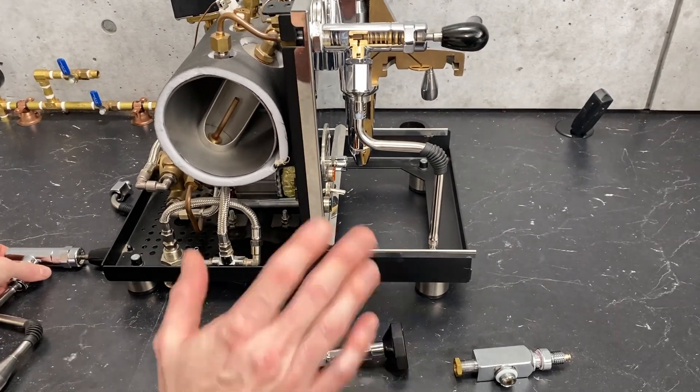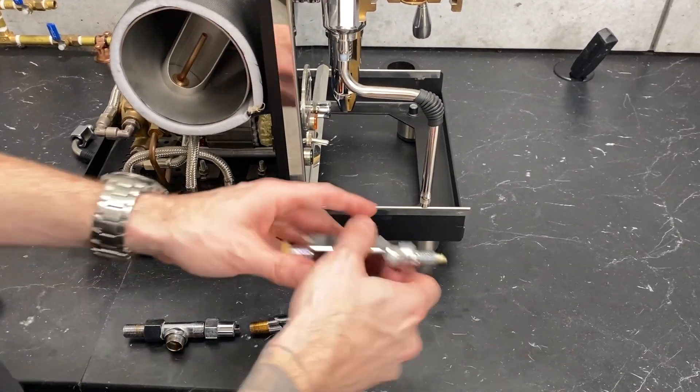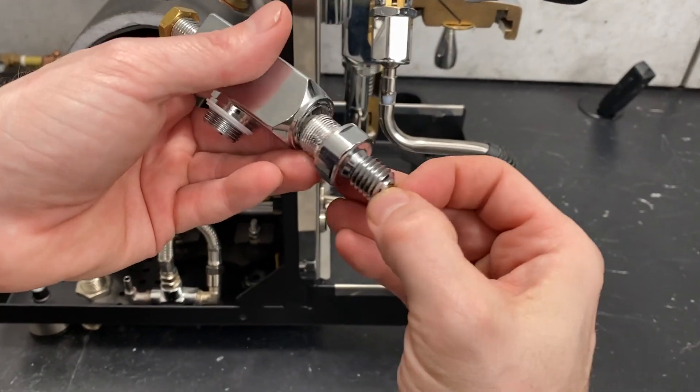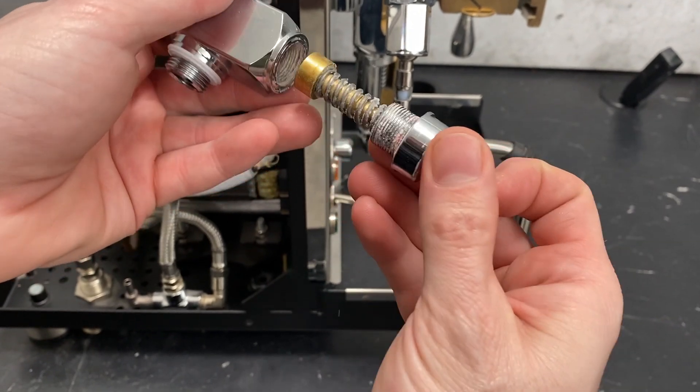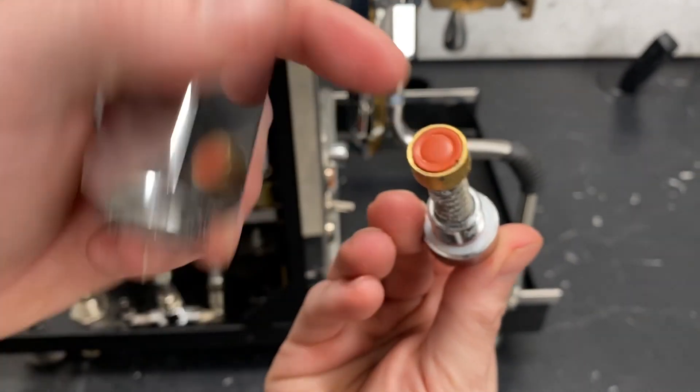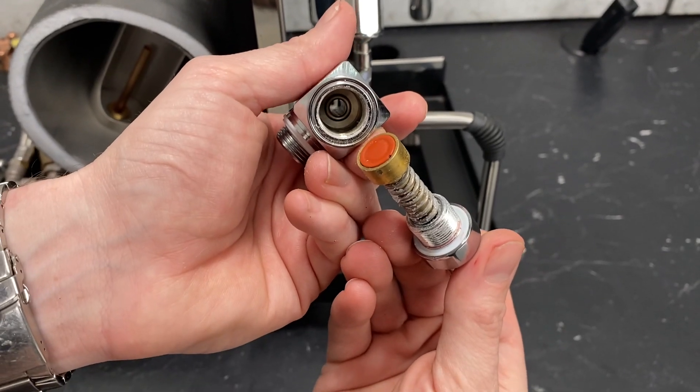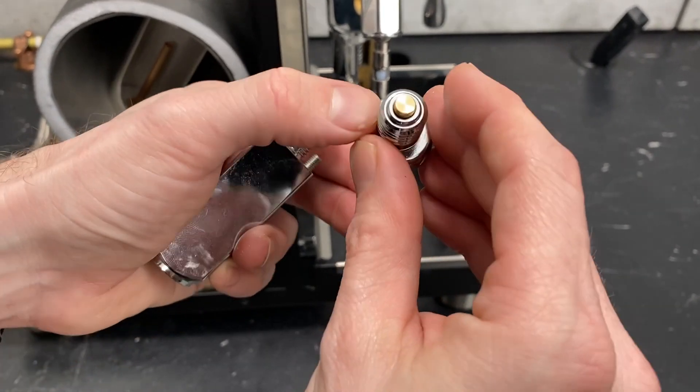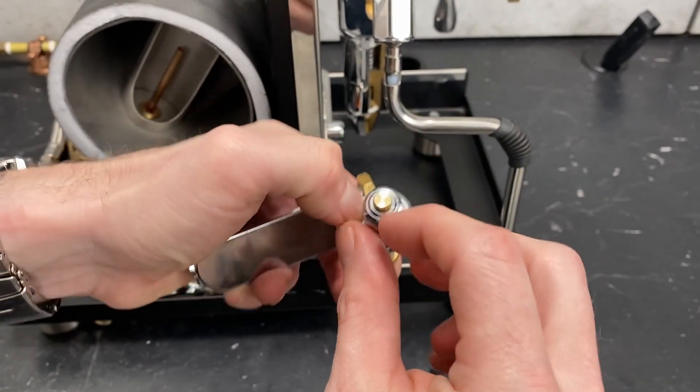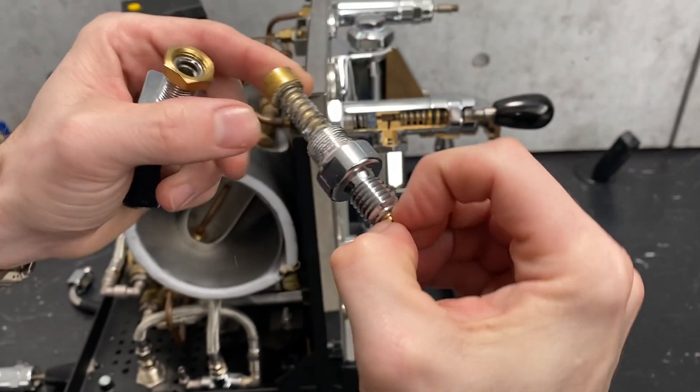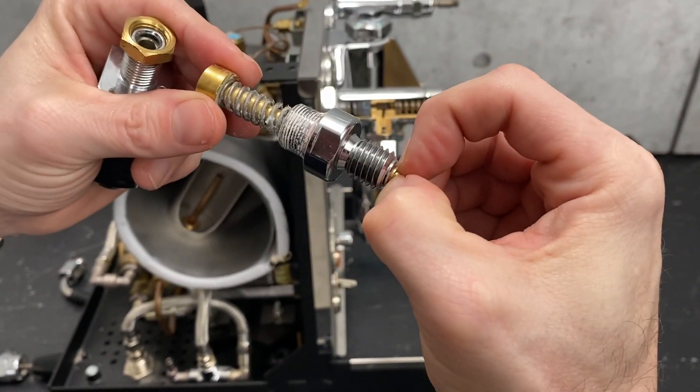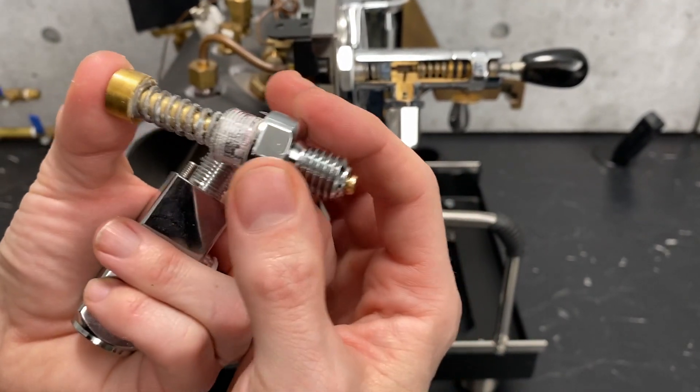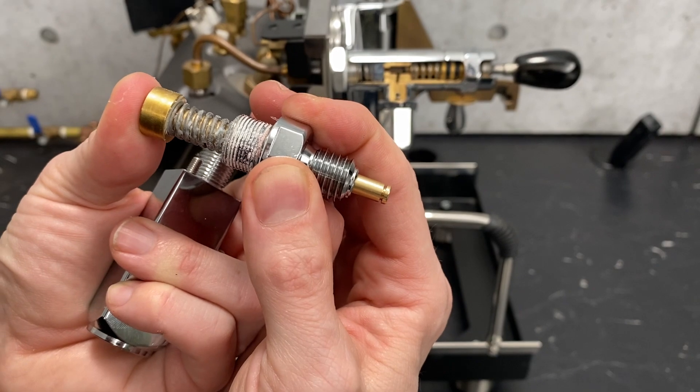So that is the sprung valve. That's similar to what you would see inside the Profitec valves here. It's a little bit different of a setup. You've still got the spring inside there, and you have a seal that goes up against that opening in there. The way that this one works is there's usually behind the handle here, there's a little clip that goes on here that holds this whole assembly together. So as you turn the knob, it's actually bringing that that way.